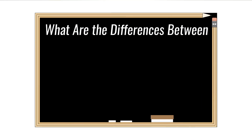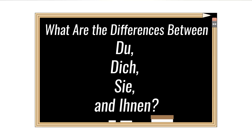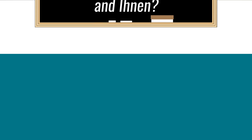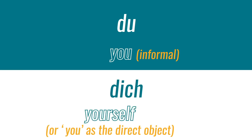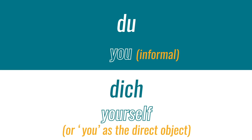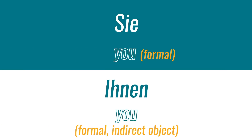The question for this lesson is: what are the differences between du, dich, sie, and ihnen? Lowercase du means 'you' informally, and dich means 'yourself' or 'you' as the direct object. Capital Sie means 'you' formally, and ihnen is 'you' as the formal indirect object.